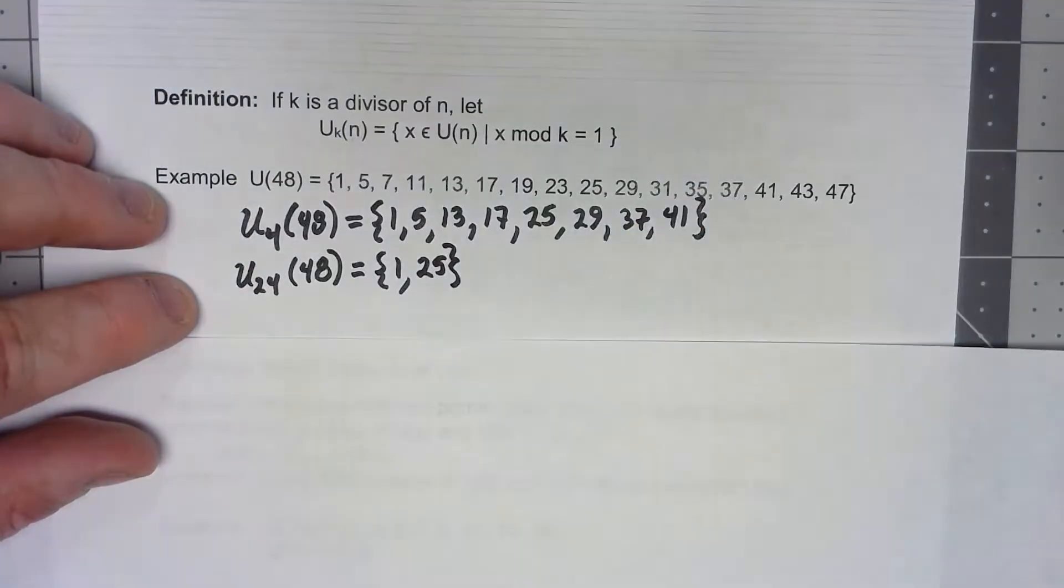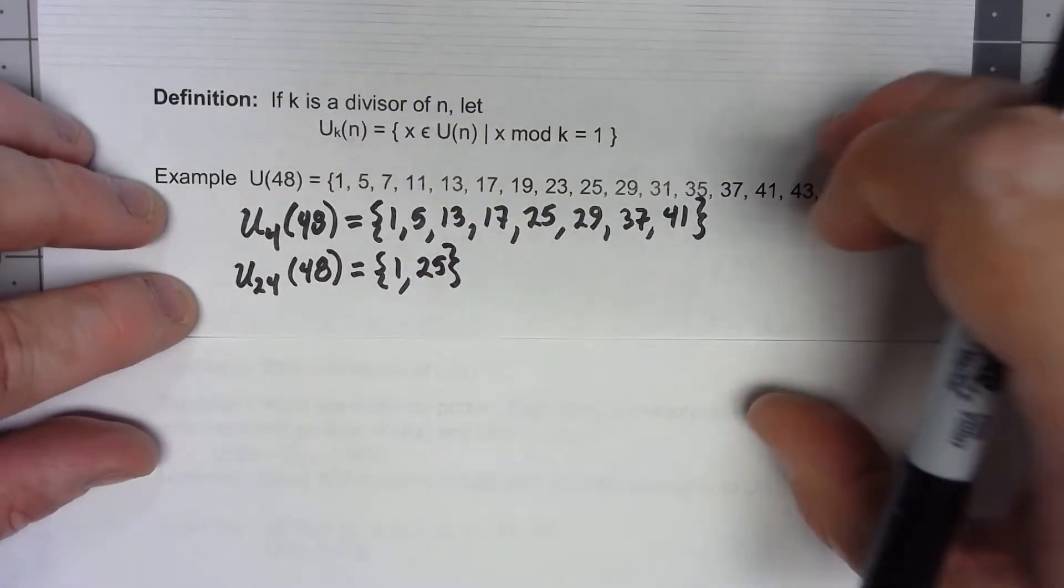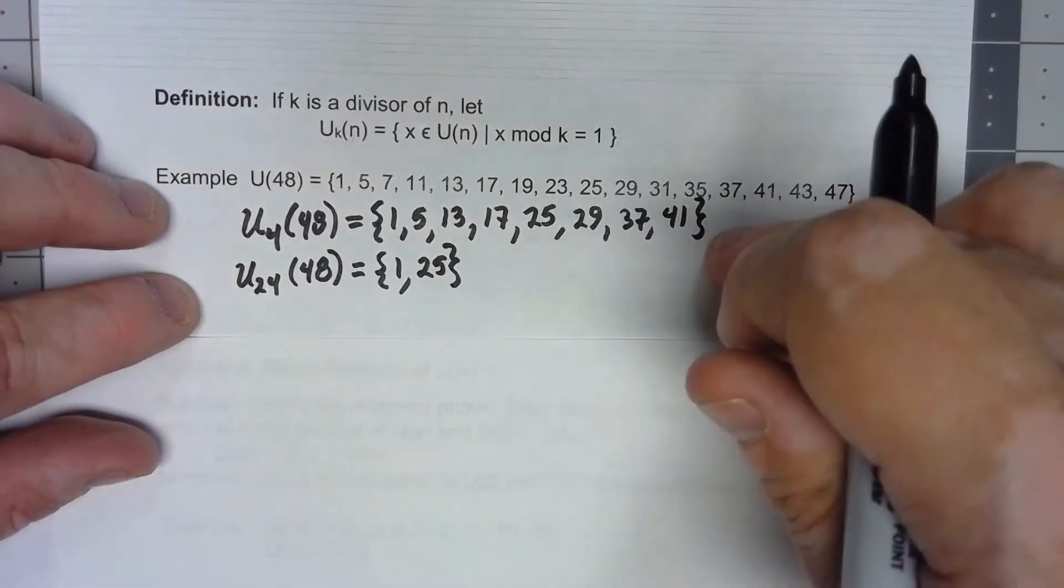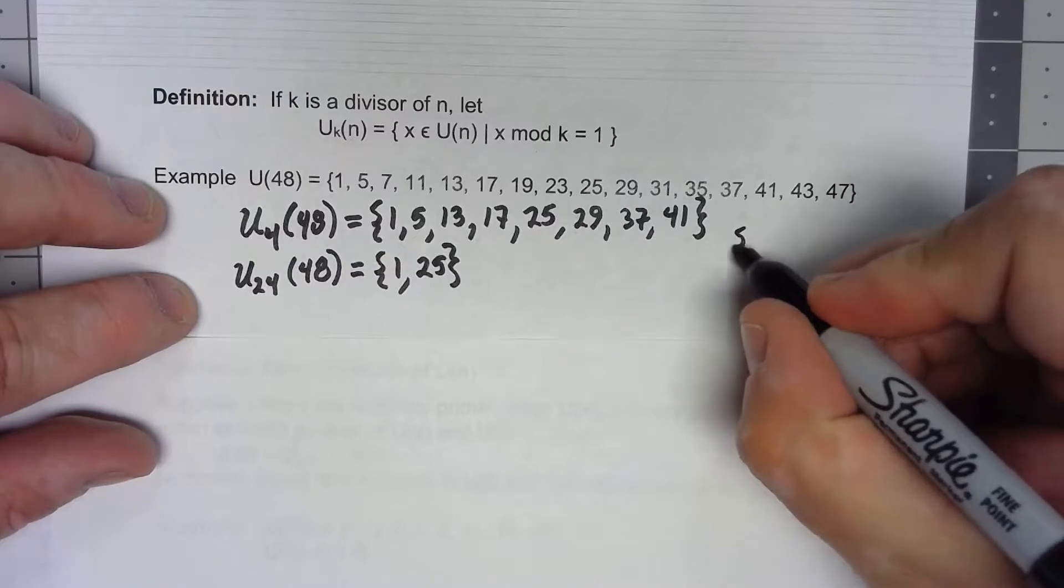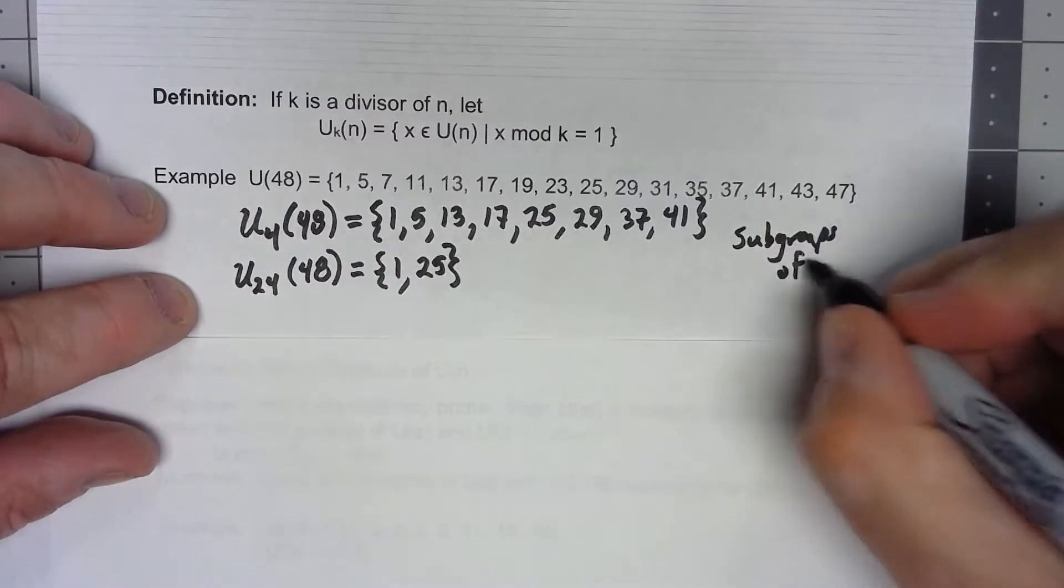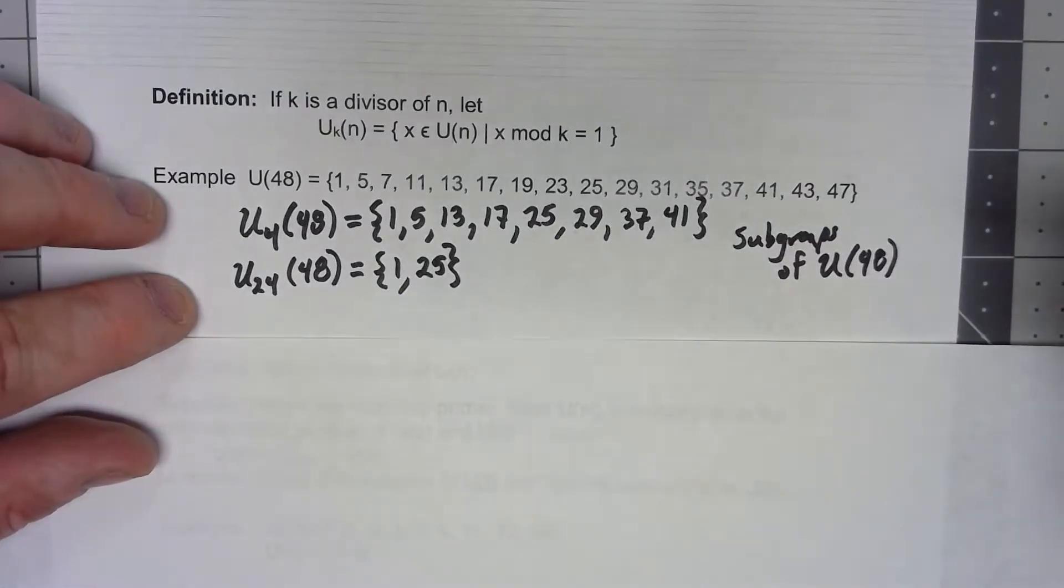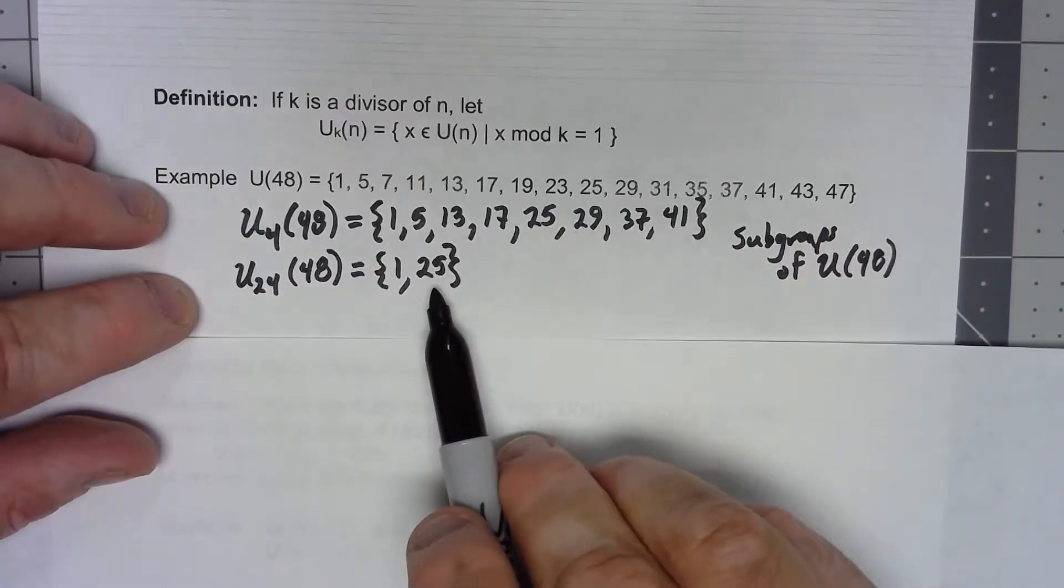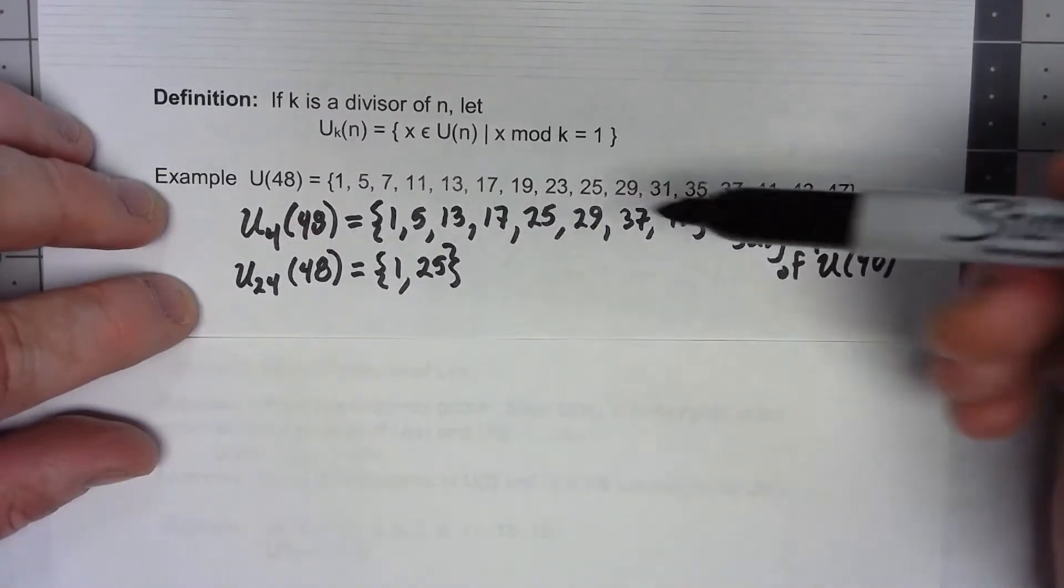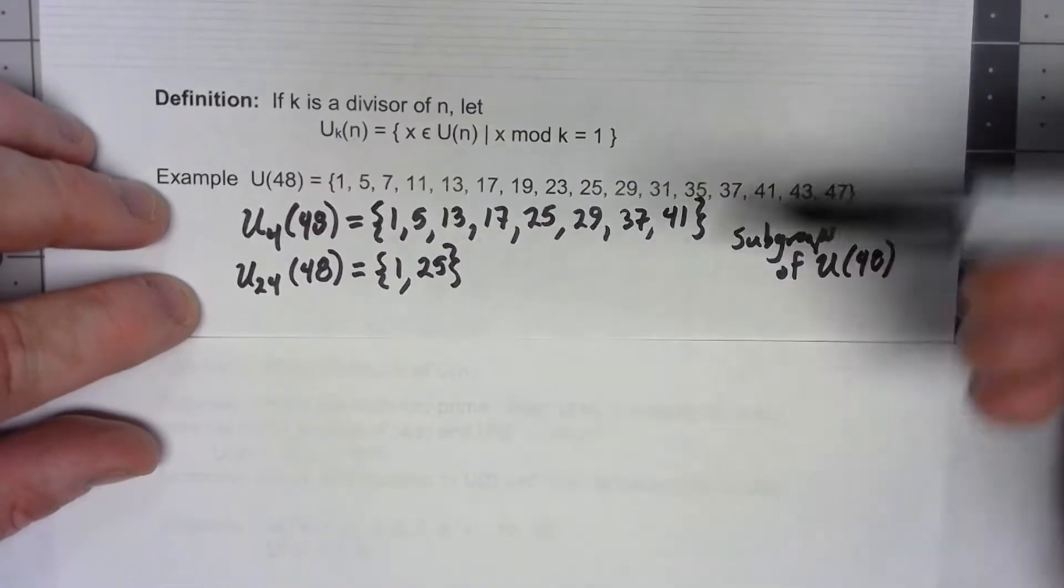Now I'm not going to go ahead and show this but it's worth noting that these are in fact subgroups of U(48). It takes a little bit to show them but mainly again we just need to show that they're closed and that they each have inverses and it's going to turn out that yes when we do this we're going to get a subgroup.